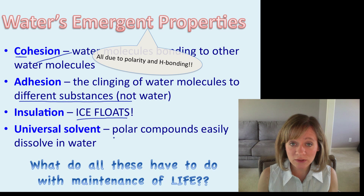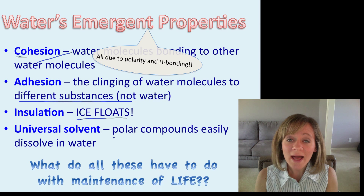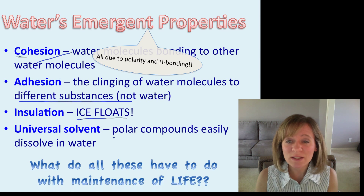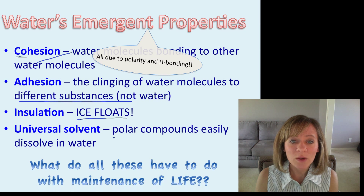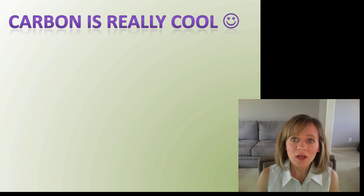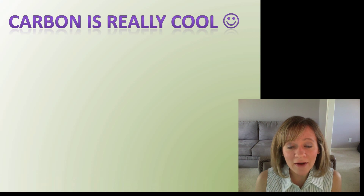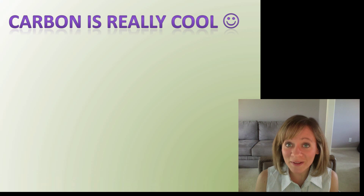In class we're going to look at these properties in depth and think about what they have to do with the maintenance of life. We're going to apply these to plants, animals, bacteria, and any other form of life. Now let's move on to another type of matter besides hydrogen, oxygen, and water, and look at carbon.